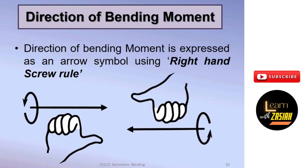For the clockwise case, the bending moment is acting in the clockwise direction. So here you have to use your right hand and just try to bend your four fingers in the clockwise direction. Then you can find that your thumb is going toward the leftward direction. So the direction is in the leftward direction.